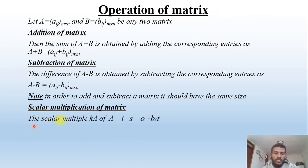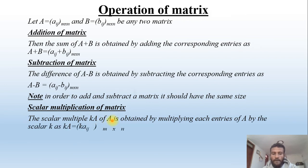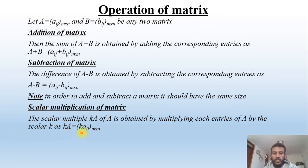Scalar multiplication of a matrix A is obtained by multiplying each entry of A by the scalar k, giving kA = [k·aᵢⱼ] of size m×n, where k is the scalar.